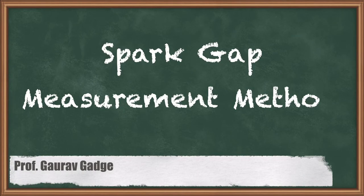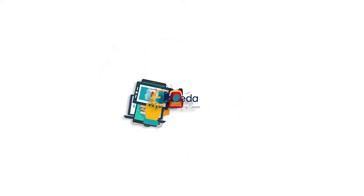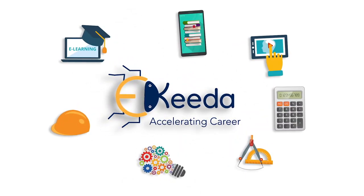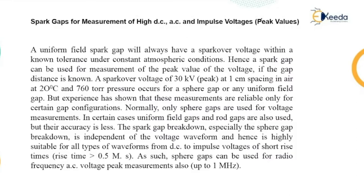Hello friends, welcome back to the lecture series on high voltage engineering. This is the last topic of this particular chapter — the spark gap for measurement of high DC, AC, and impulse voltage. Impulse voltage is also called peak values, so a spark gap can be used for the measurement of these high DC, AC, and impulse values of voltages.